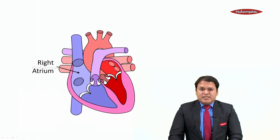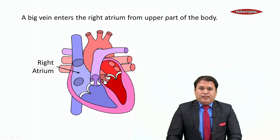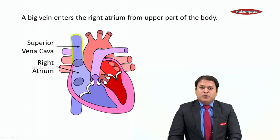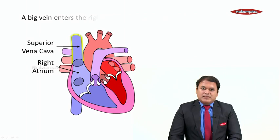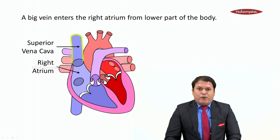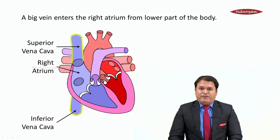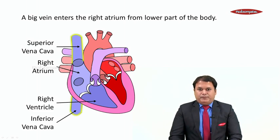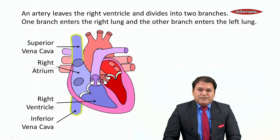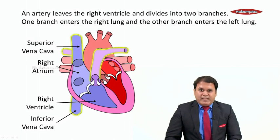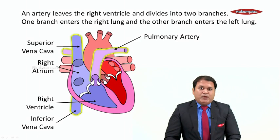This is the right atrium. A big vein of the body enters the right atrium from the upper part of the body — this big vein is called the superior vena cava, 'superior' because it comes from the upper part of the body. Similarly, a big vein enters the right atrium from the lower part of the body, and this vein is called the inferior vena cava. Moving to the right ventricle, an artery leaves it and divides into two branches — one branch enters the right lung and the other enters the left lung. This artery is called the pulmonary artery, 'pulmonary' because it enters the lungs.